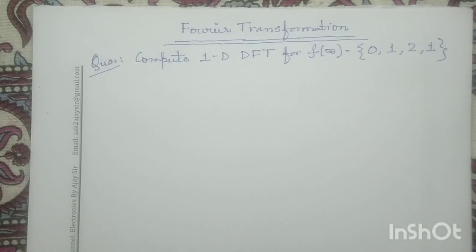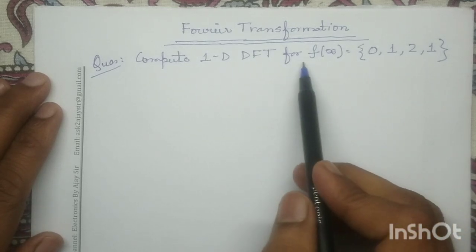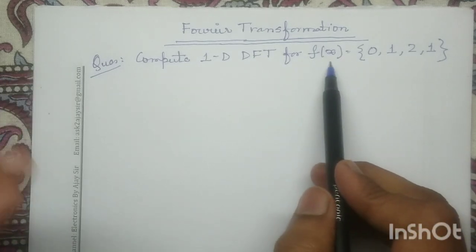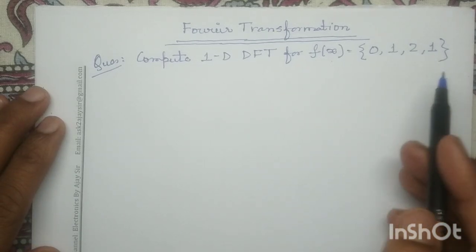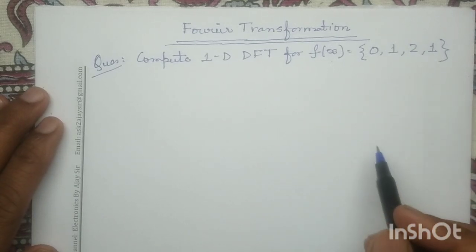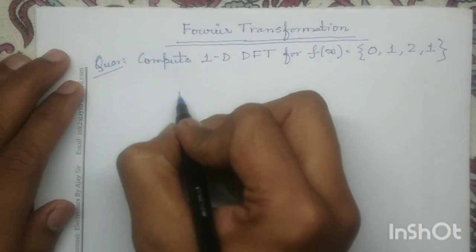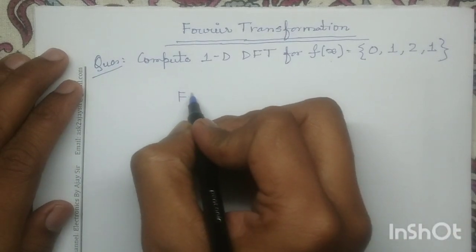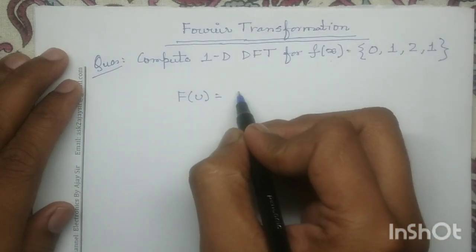Good morning all. Let us discuss one numerical question on one-dimensional discrete Fourier transformation. In this question, f — the signal representation in the spatial domain — is given to us as 0, 1, 2, 1, and we have to compute its discrete Fourier transformation. That means we have to determine F(u) for this given input signal.